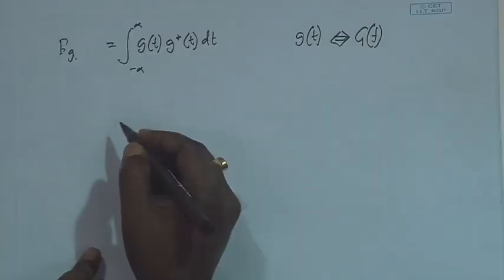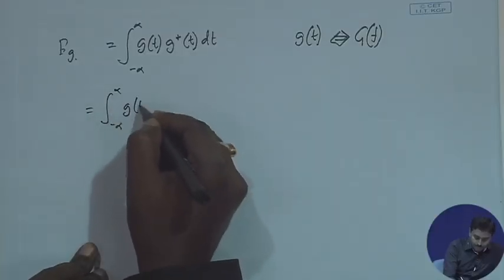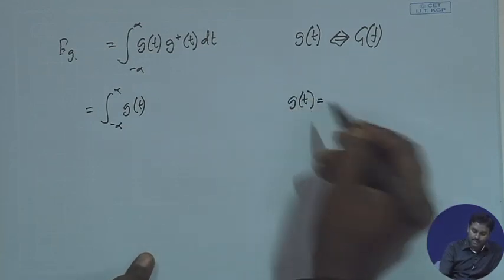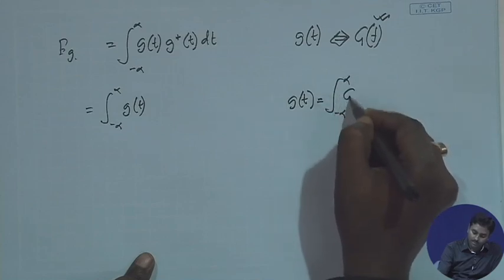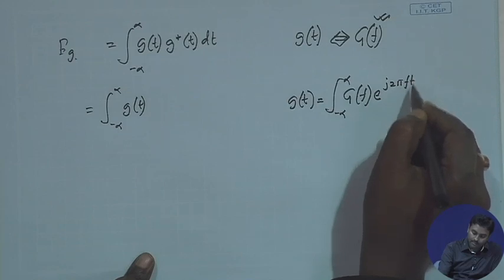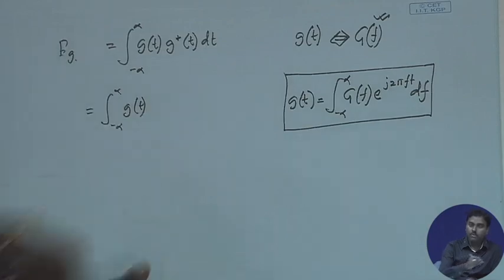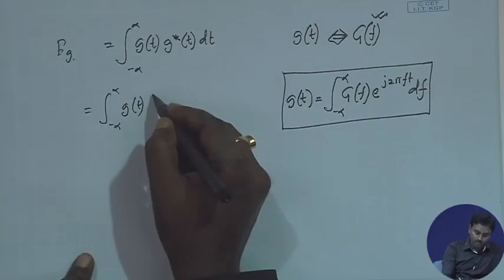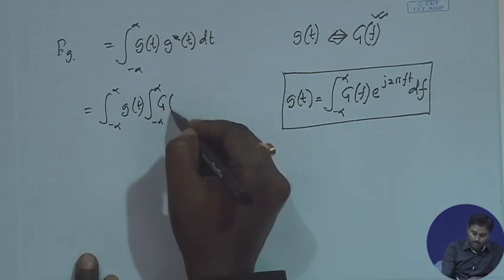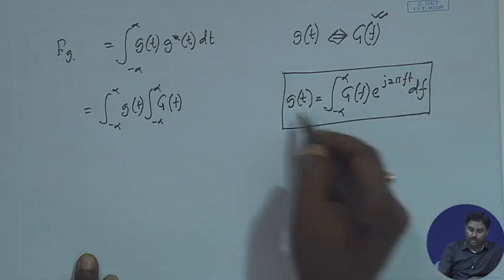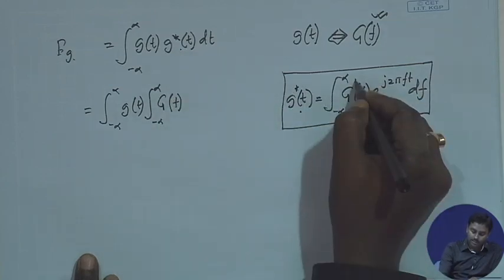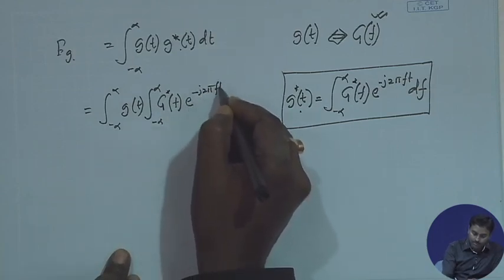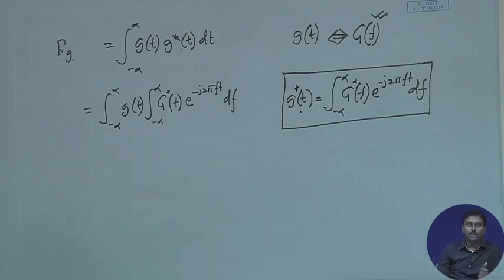We have already talked about the inverse Fourier transform. In the inverse Fourier transform, g(t) is represented as: g(t) = ∫₋∞^∞ g(f) · e^(j2πft) df. So we will replace g*(t) using this. Taking the complex conjugate: g*(t) = ∫₋∞^∞ g*(f) · e^(−j2πft) df. So we have replaced one of them. We still have the g(t) term remaining.